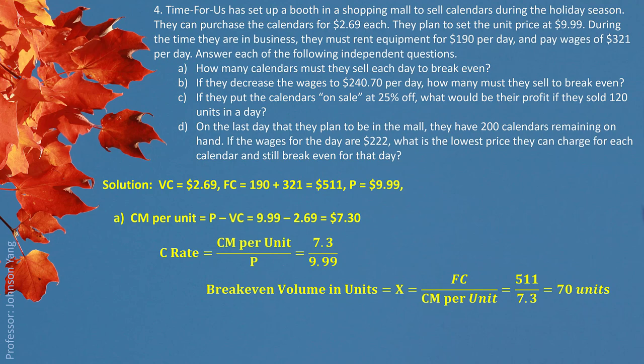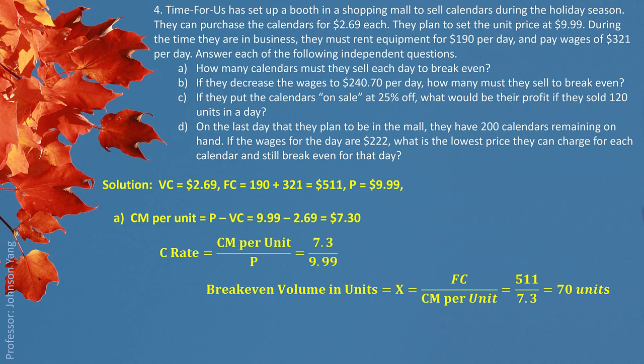For Part B, if they decrease the wages to $240.70 per day, the fixed cost changes to $190 plus $240.70. With this new fixed cost per day, the new break-even point would be 59 units.